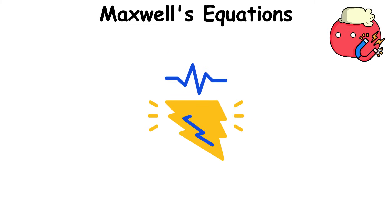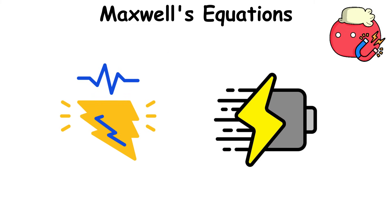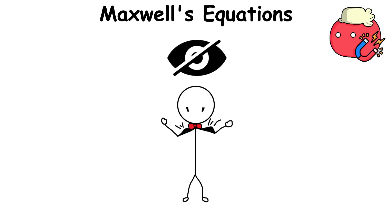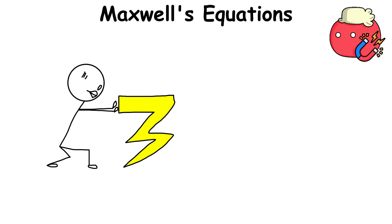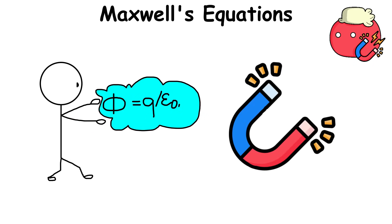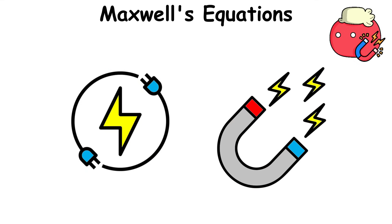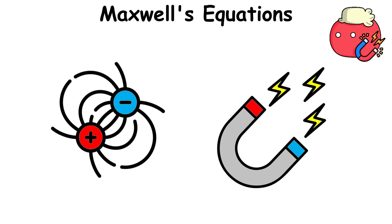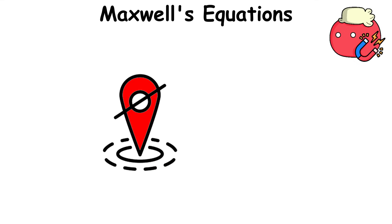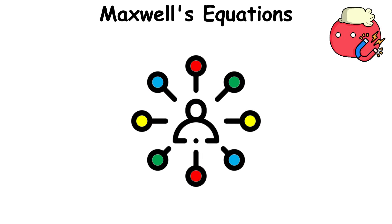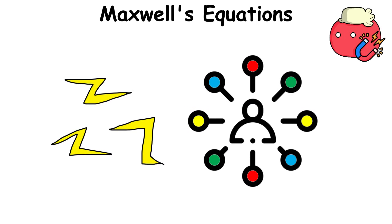The first is Gauss's law for electricity, which describes how electric charges create invisible forces called electric fields that can push or pull other charges. Meanwhile, Gauss's law for magnetism talks about how moving electric charges or changing electric fields can produce magnetic fields, invisible areas around a magnet that can influence other objects or move charges that also have their fields.